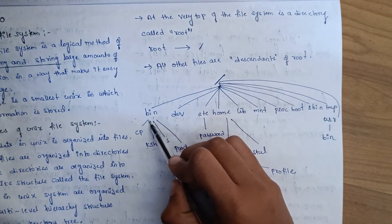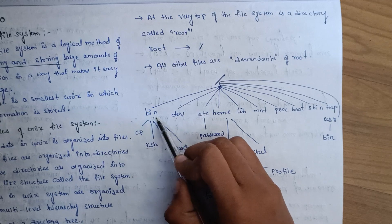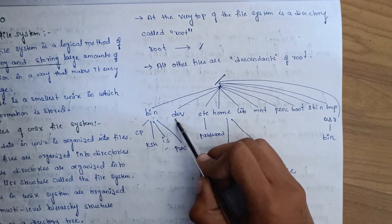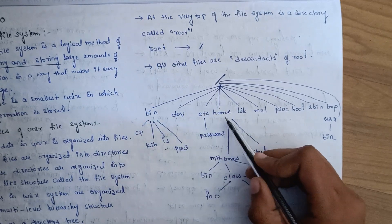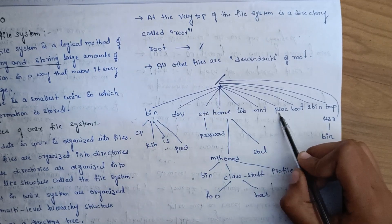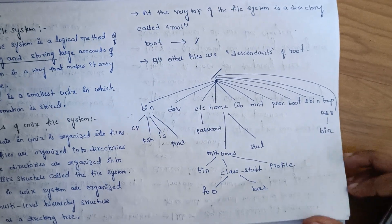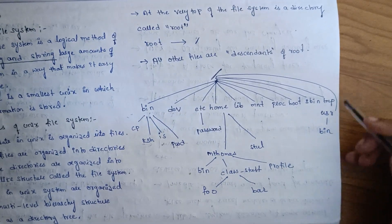Next, from root we have: BIN, DEV, HOME, LIB, MNT, PROC, BOOT, SBIN, TEMP, USER, BIN. Under BIN we have: CP, KSH, LS, PWD.